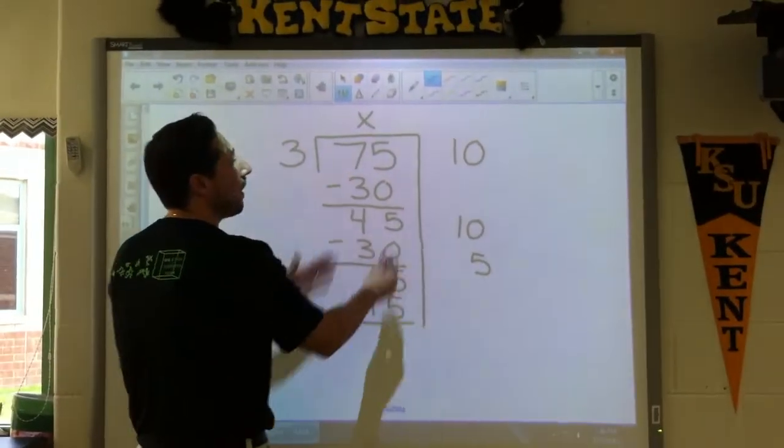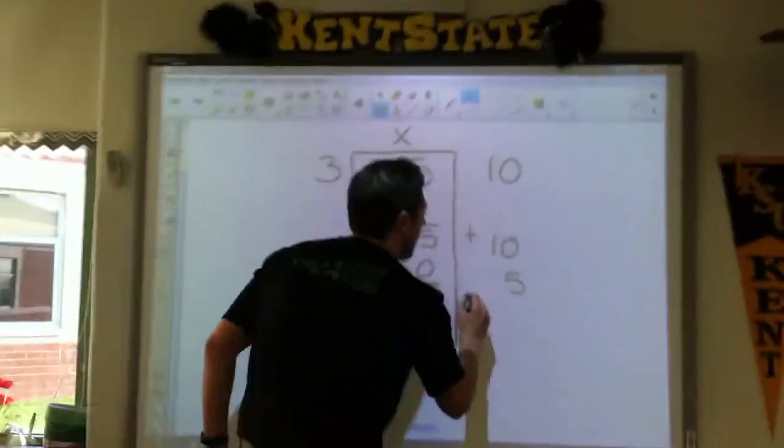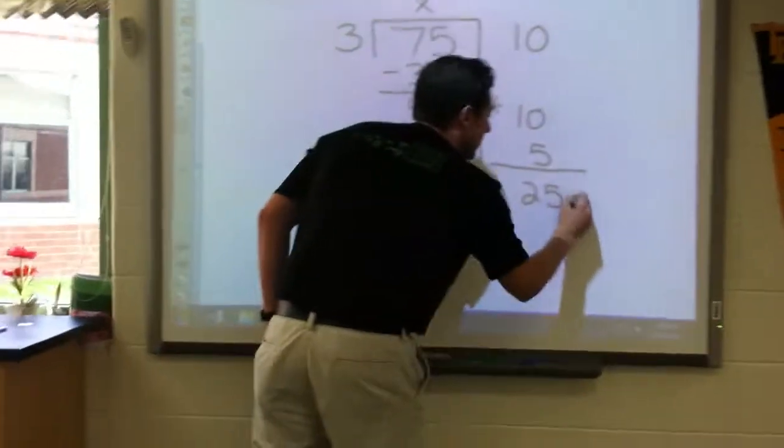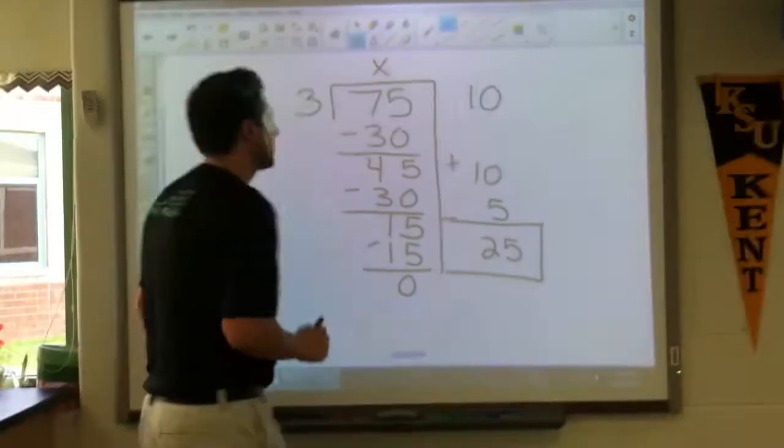At that point, I am done. All I've got to do is add up all of my factors over here. We've got 10, 20, 5. 25 is the answer to this problem.